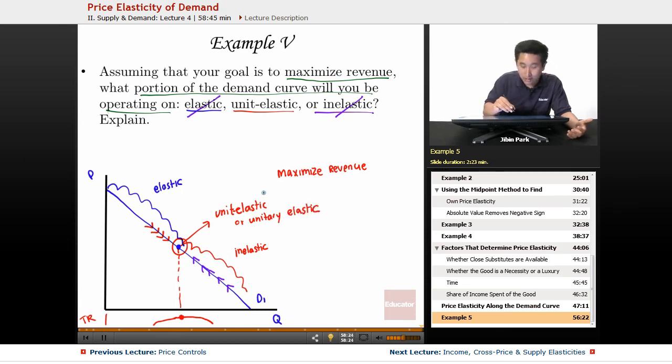So the explanation is that you maximize revenue at the unit elastic point because the left-hand side of the demand curve is going to be elastic. The right-hand side of the demand curve is going to be inelastic.